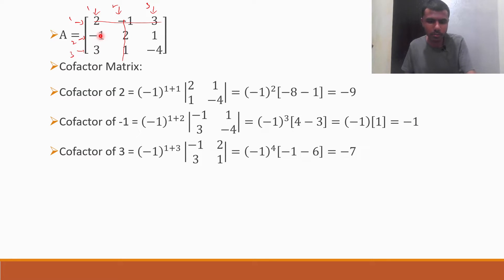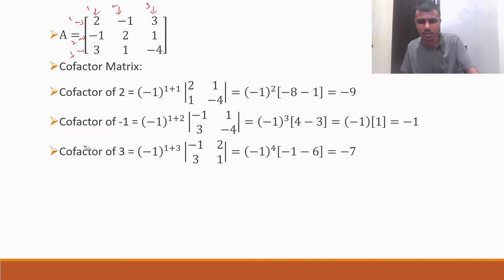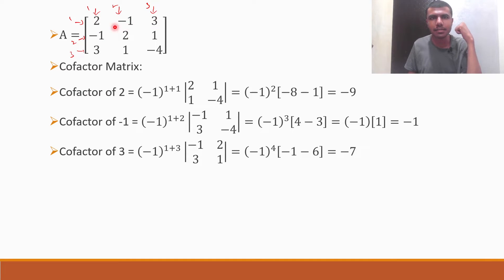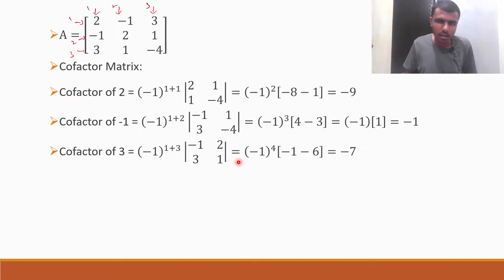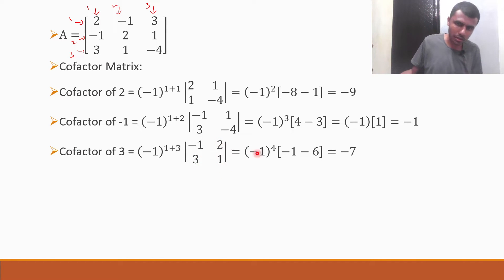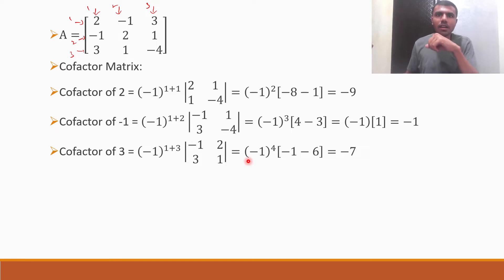Now next, cofactor of 3. 3 is in first row, third column — position 1,3. So minus 1 to the power 1 plus 3. Strike off the row and column in which 3 is there, giving the minor determinant of minus 1, 2, 3, 1. Minus 1 into 1 is minus 1, minus 3 twos are 6, so minus 1 minus 6. Minus 1 to the power even number you can ignore it. So that gives minus 1 minus 6 is minus 7.